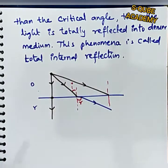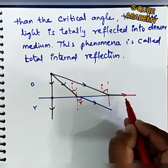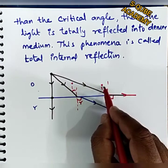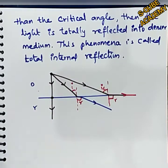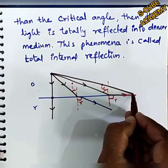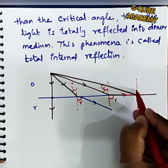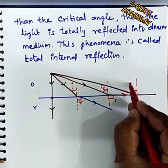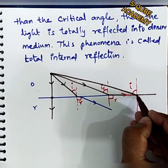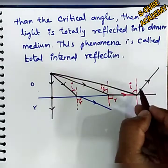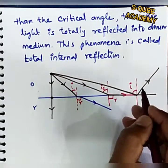When the angle of incidence equals 90 degrees — that is, equal to the critical angle — the angle of refraction is also at the critical angle. Beyond this, the light undergoes total internal reflection back into the second medium.